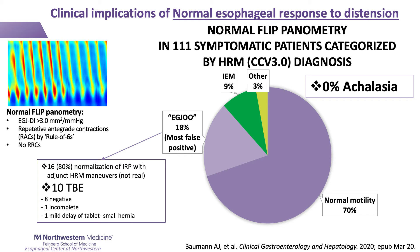The remainder had HRM findings of typically inconclusive or uncertain clinical relevance. Patients with EGJ outflow obstruction on manometry almost all had normalization of findings on expanded HRM protocols, and those who completed esophagram were normal — thus classified as normal per version 4 of the Chicago Classification. Very importantly, none of these patients had achalasia, nor were any treated with achalasia-type treatments.